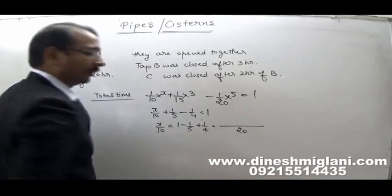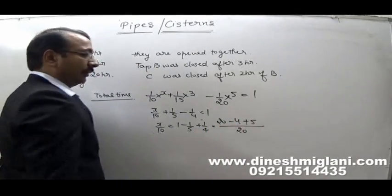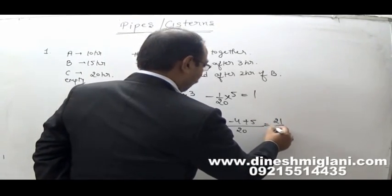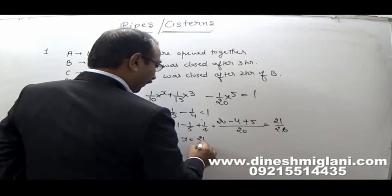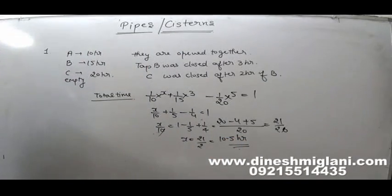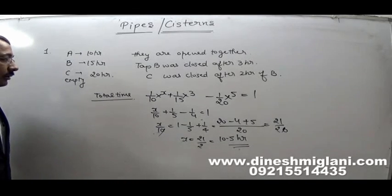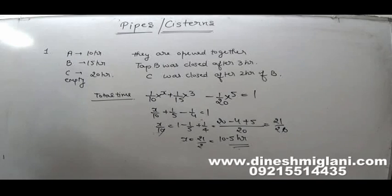Solving: X/10 = 1 − 1/5 + 1/4. LCM is 20, so that is (20 − 4 + 5)/20 = 21/20. Therefore X = 21/2 or 10.5 hours. So the total time taken by them to fill the tank is 10.5 hours. The questions are simple — whatever concept you studied in time and work, just apply it here.